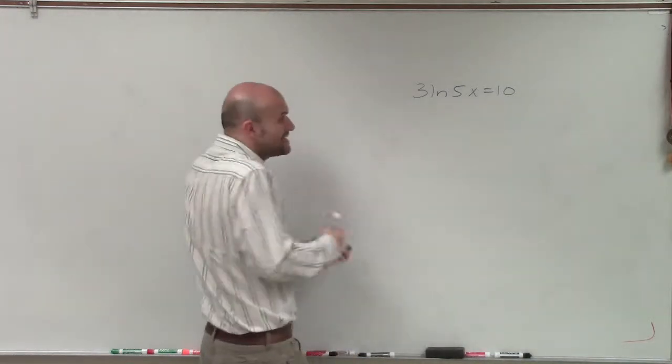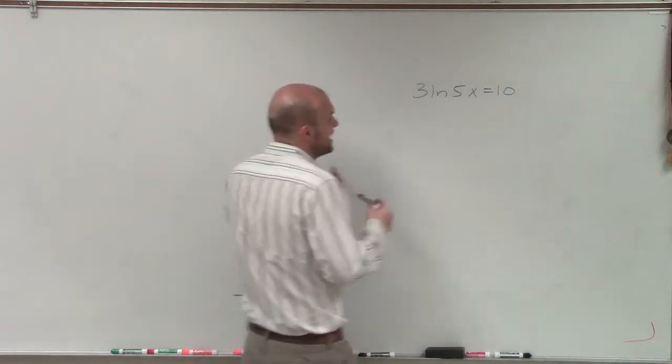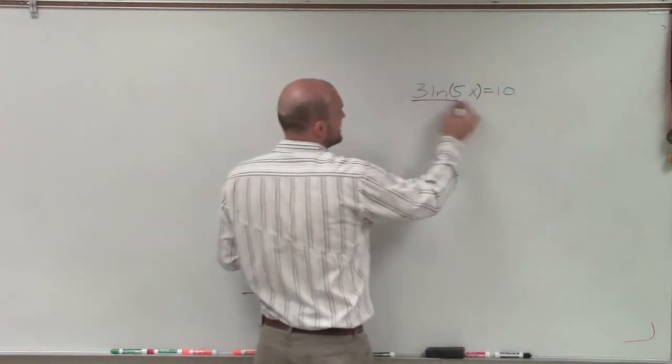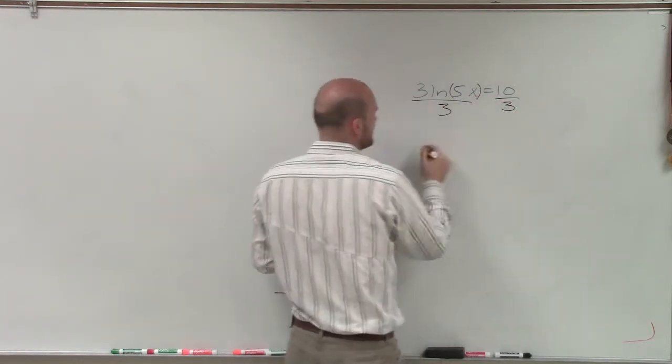And again, to solve for this, we need to isolate the logarithm. Remember, this is 3 times ln of 5x. So to isolate this, I need to divide by 3 on both sides.